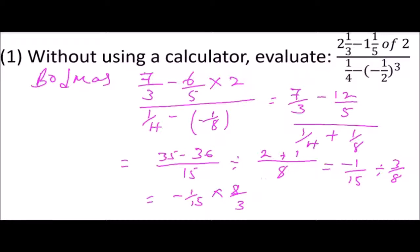From there, you say it is -1/15 multiplied by 8/3. This will give you 1 times 8 is 8, divided by 15 times 3, which is 45. So -8/45 is the answer to that question.